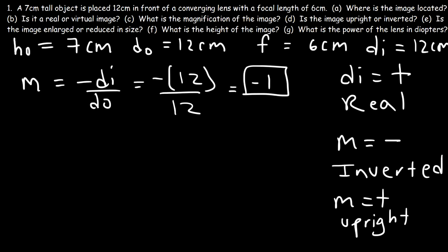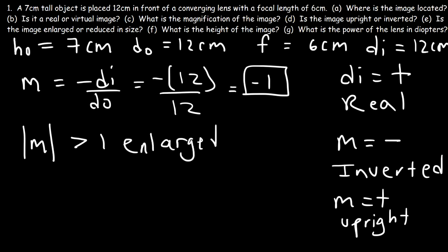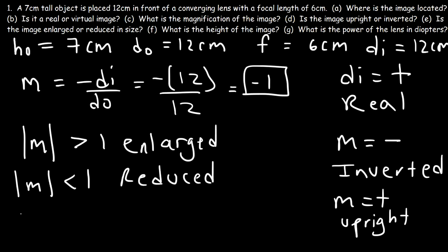Is the image enlarged or reduced? If the absolute value of M is greater than 1, it's enlarged. If the absolute value of M is less than 1, it's reduced. However, in this example, the absolute value of M equals 1, so it's neither enlarged nor reduced — it's the same size.